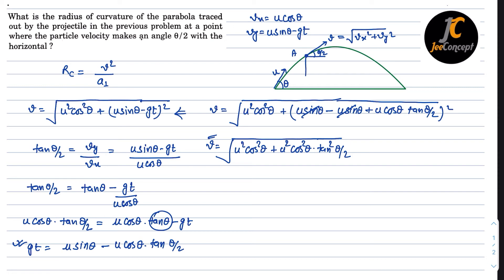Now we have to calculate a perpendicular. Gravity is acting in the downward direction, so we need the component of gravitational acceleration perpendicular to the velocity. Since the velocity makes an angle theta by 2 with the horizontal, and gravity acts vertically, this angle between them means the perpendicular component is g·cos(theta/2).